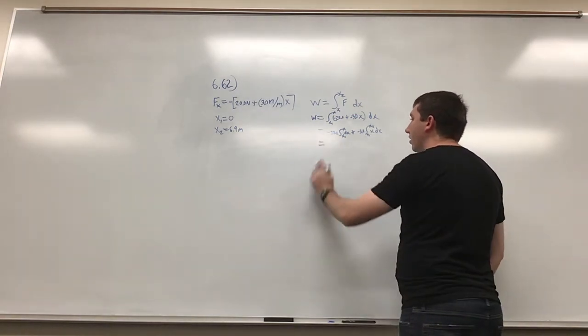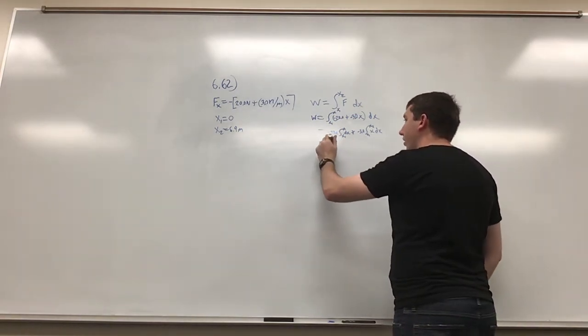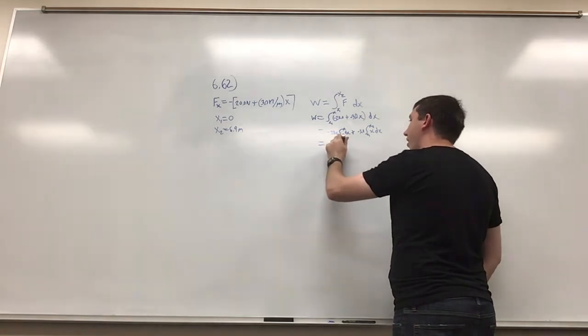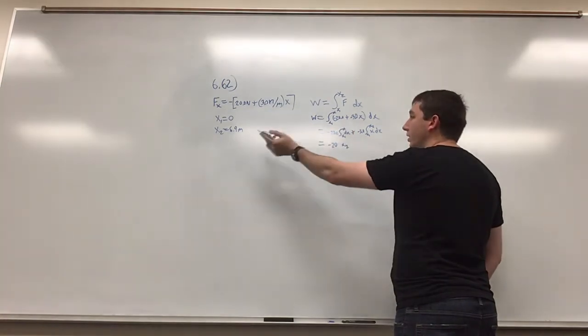Then solve, so this becomes negative 20 times x2. x1 is 0, so we're really only worried about x2.